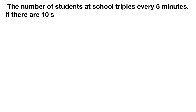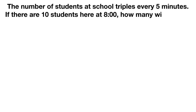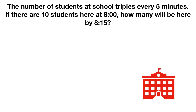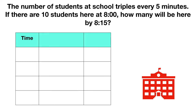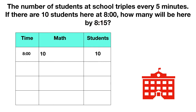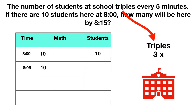Here's your last problem. The number of students at school triples every five minutes. If there are ten students at 8 o'clock, how many will be there by 8:15? At 8 o'clock, there are ten students — no math needed. By 8:05, the number has tripled. When something triples, it becomes three times as much, so ten students multiplied by three gives 30 students.